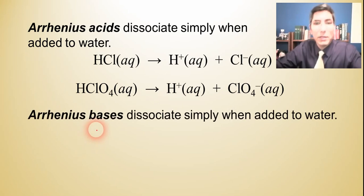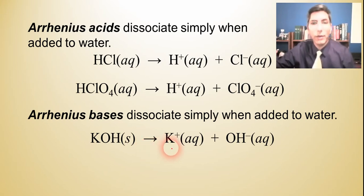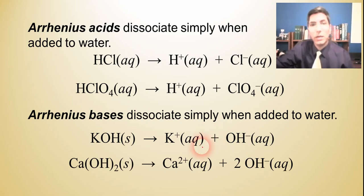Now, an Arrhenius base will do the same thing. It's going to dissociate very simply when it's added to water. So potassium hydroxide, one of the most common ones, it breaks apart into its component ions, just like pretty much all ionic compounds will do if they are able to dissolve in water. So potassium ions and hydroxide ions. And that's what an Arrhenius base does, or calcium hydroxide. Now, this one might be a little trickier because it has two hydroxides. So you've got to balance the equation with a two in front of the hydroxide. But it's basically the same thing. These are just breaking apart, dissociating into their component ions when they get dissolved into water.